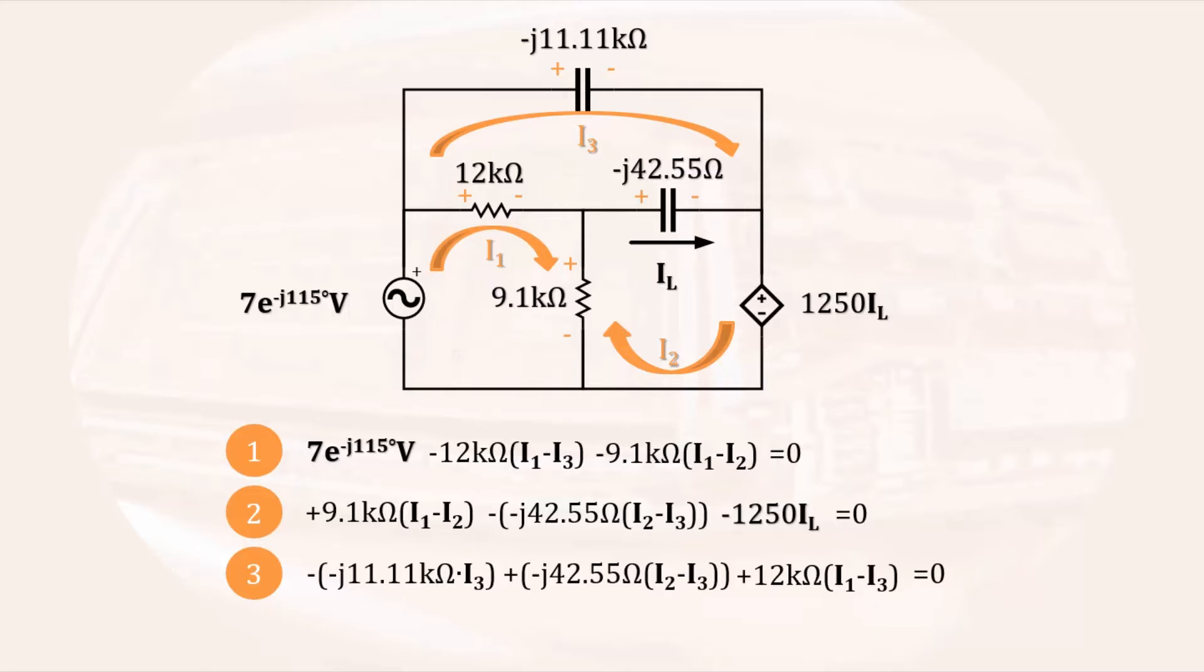This circuit contains a dependent source, so the last equation will be writing the controlling parameter in terms of mesh currents. The branch that has IL going through it touches both loop 2 and loop 3. The current for loop 2 goes in the same direction as IL, so IL is equal to I2 minus I3.